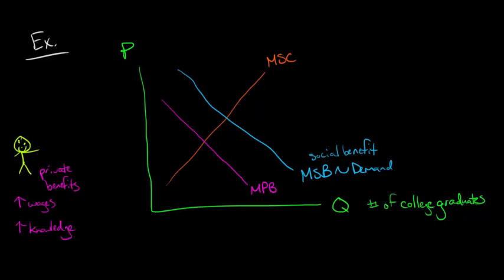our equilibrium, our socially efficient level, would be where marginal social cost equals marginal social benefit, right? So this would be the efficient, the socially efficient quantity of college graduates. Let's say that it's 10 million people or something. Let's just throw out a number there.